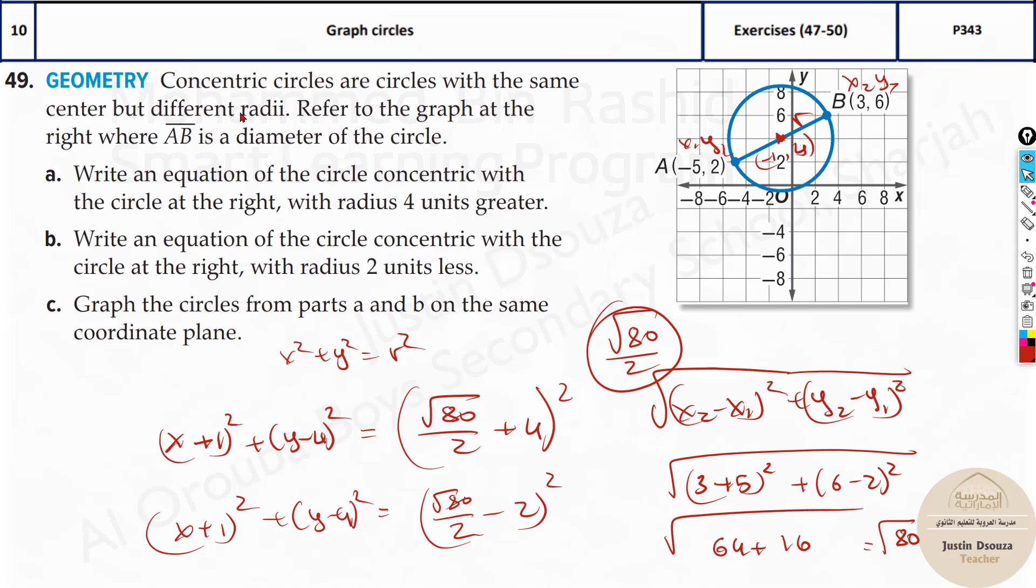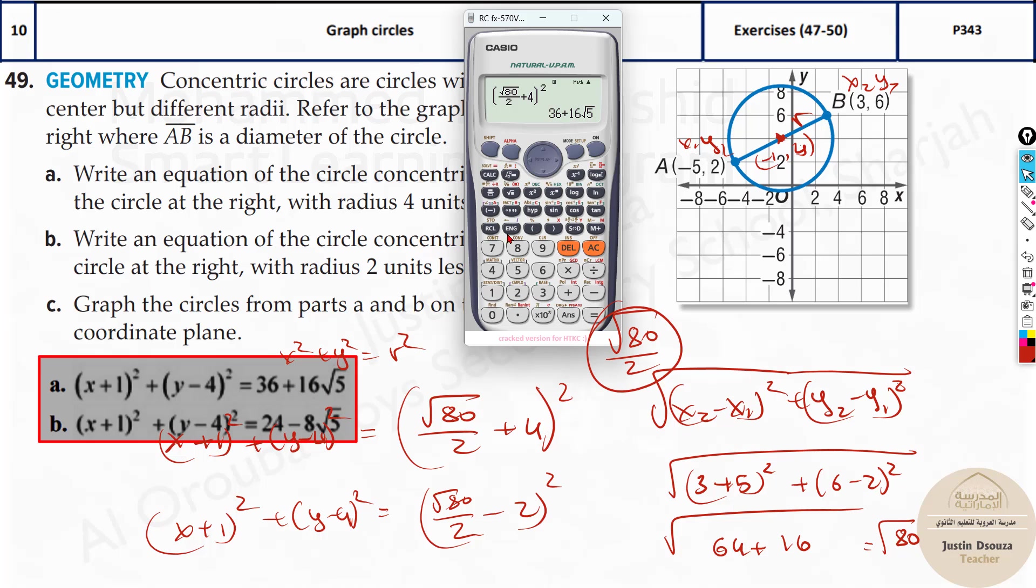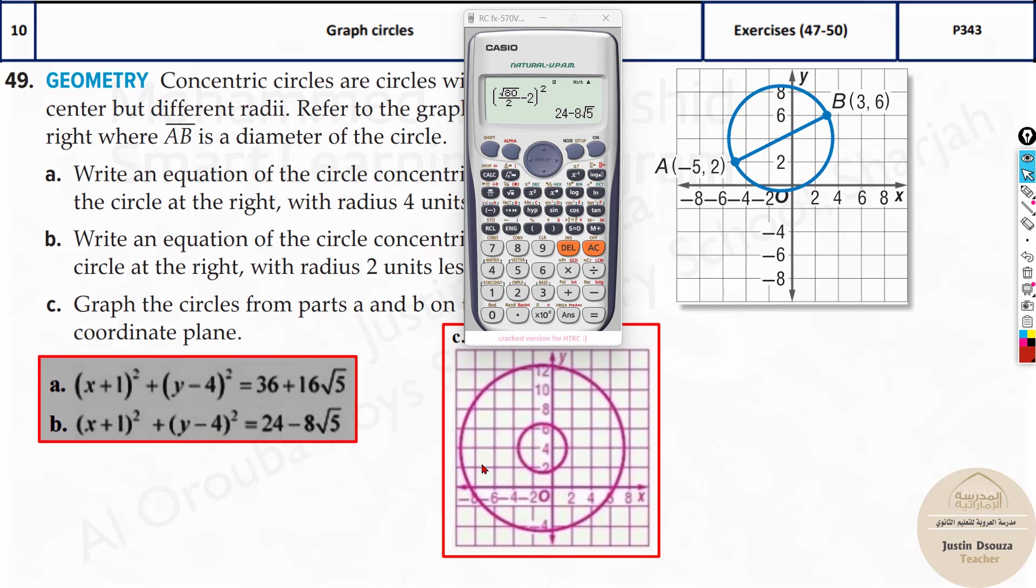Let's use our calculators and check these values. I've typed this out and the answer is 36 plus. They have written it like this or you can press SD. But this is the exact value for the first one A. For the next one, all you need to do is subtract it by 2. This is the answer. And this is the graph. This is the rough sketch. You can put the center and graph the two circles.